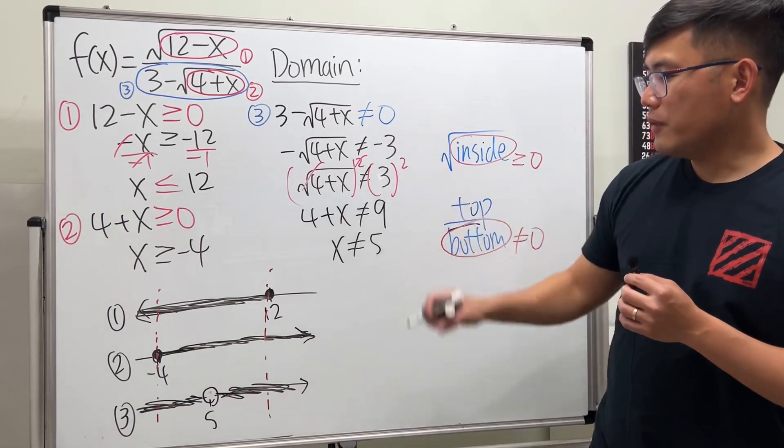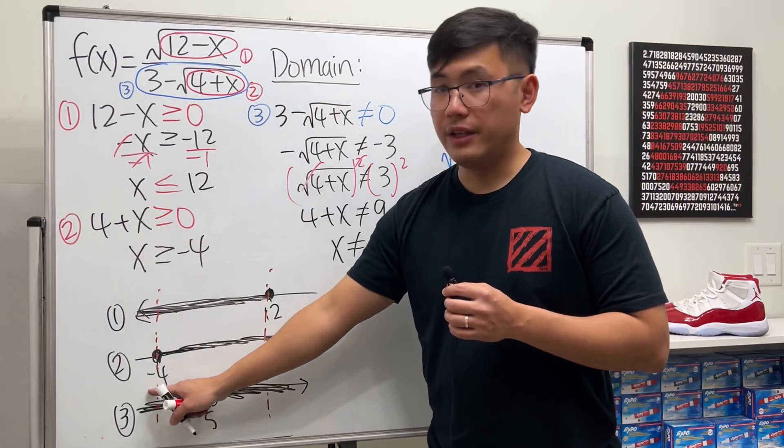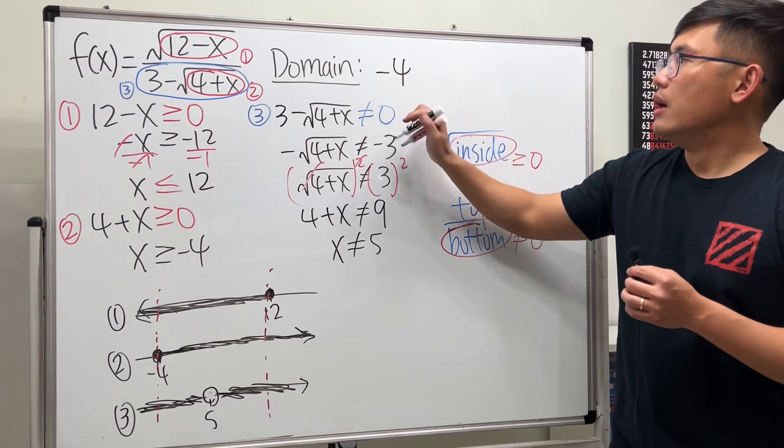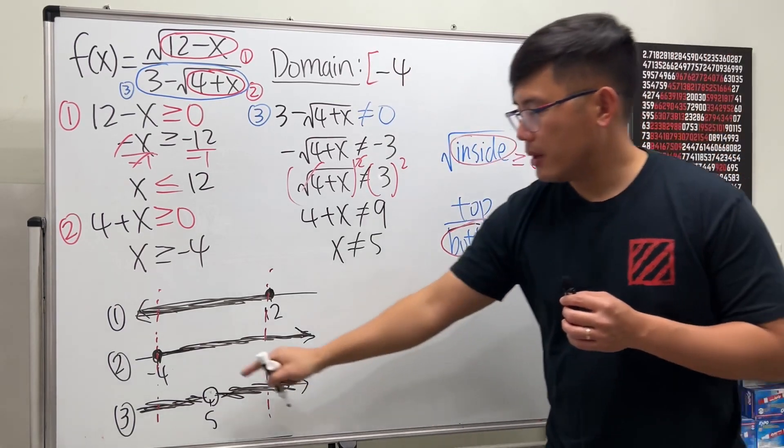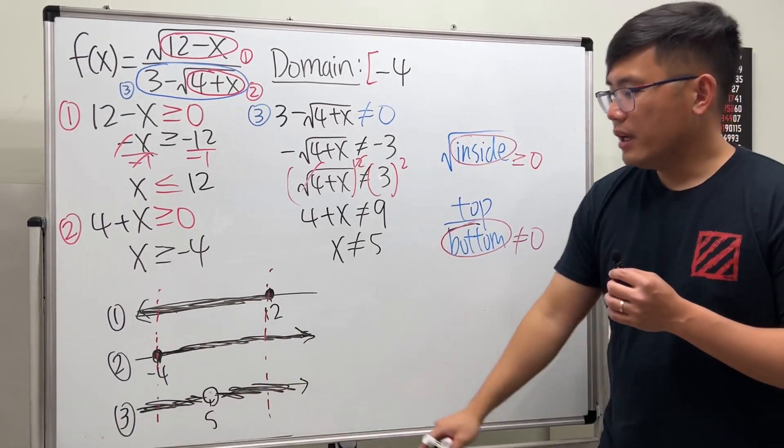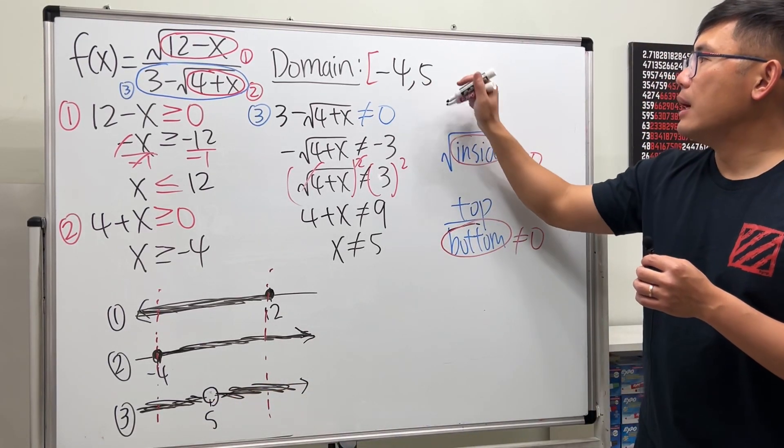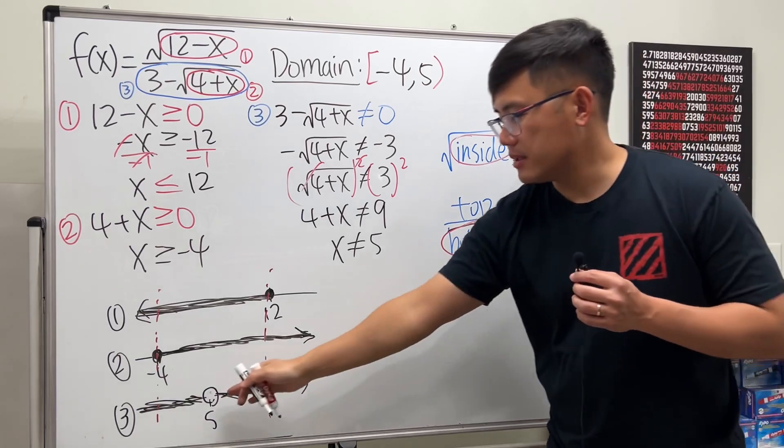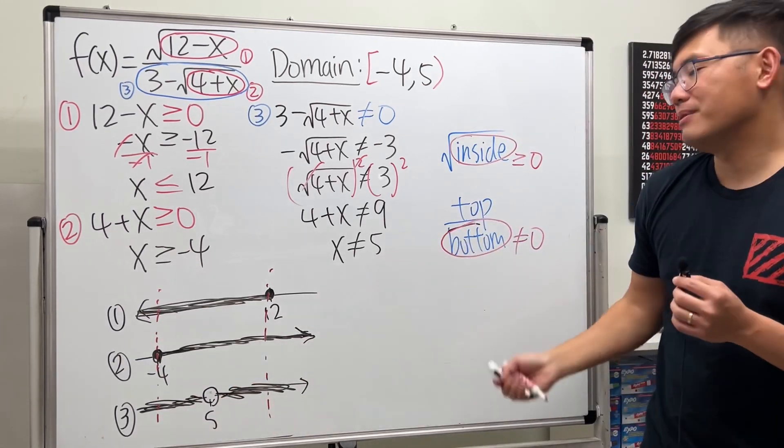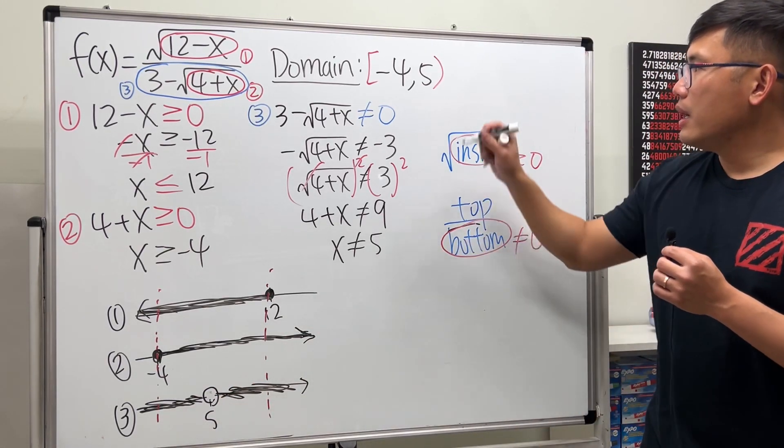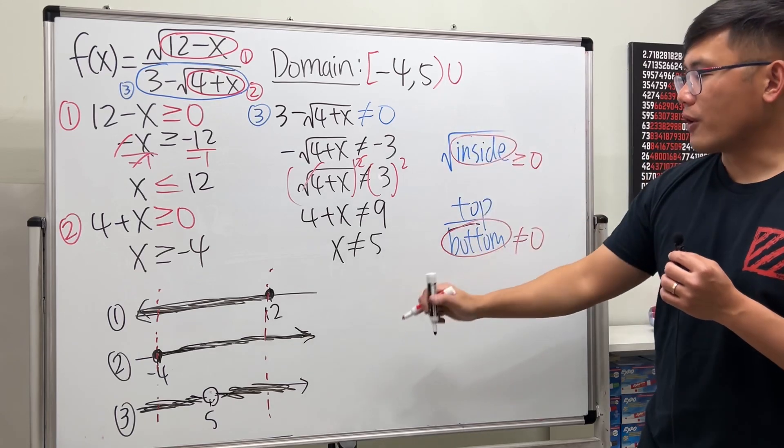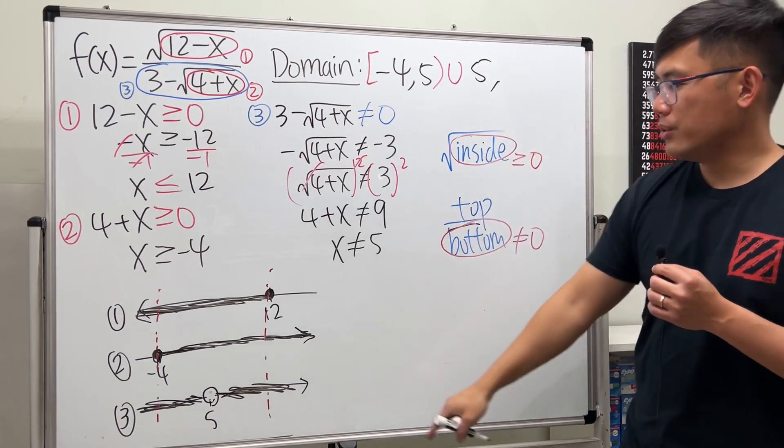So the domain for this is that we started at negative four, including negative four thanks to that closed circle, and then we have to go up to five, go up to five but not including the five because it was punched out earlier, like a hole puncher. And then union, we go from five to twelve.